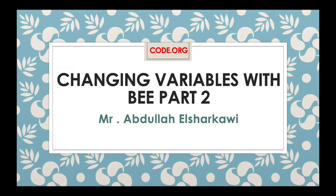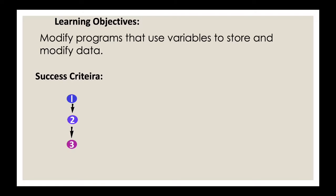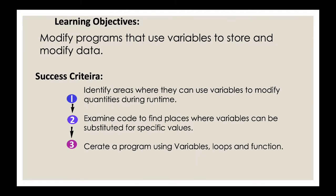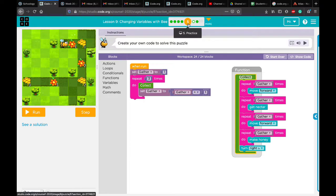Our objective is to modify programs that use variables to store and modify data. Success criteria: number one, use variables to modify quantities during runtime; number two, examine code to find places where variables can be substituted for specific values; and finally, create a program using variables, loops, and functions. We stopped at practice number five — we completed practices one through four.